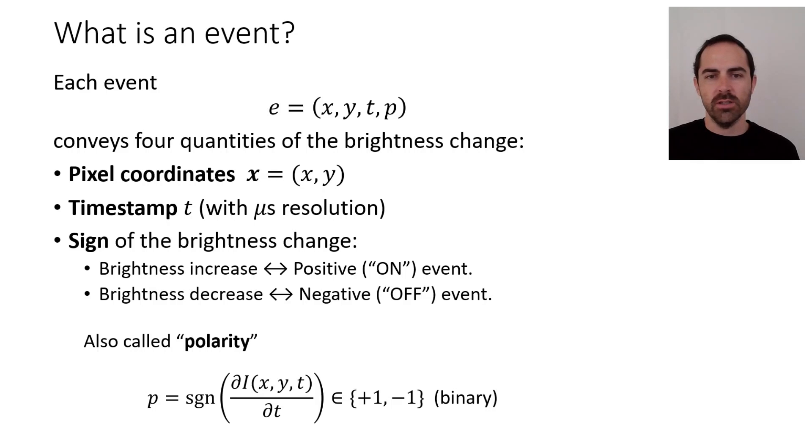The sign of the brightness change is also called the polarity. The polarity is nothing more than the temporal derivative of the intensity at the time of the event, ∂I(x,y,t)/∂t. This could be either plus one or minus one, so it's a binary quantity.